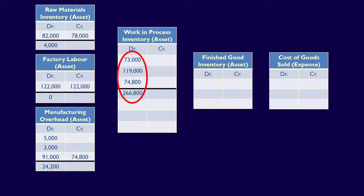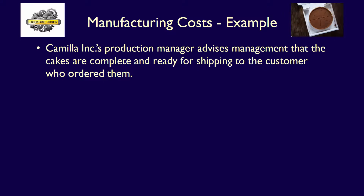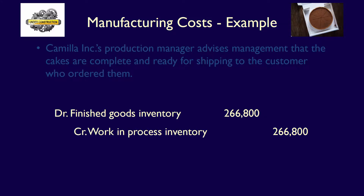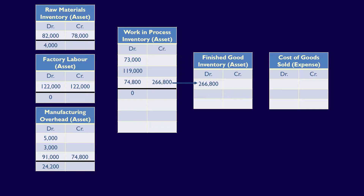All of the cakes are now complete. Management will sell the cakes to the customer who ordered them. Camilla Inc.'s production manager advises management that the cakes are complete and ready for shipping. Now that the cakes are complete, we can move them to finished goods inventory. The balance in work-in-process inventory is $266,800, and all of these cakes were processed for one customer. We therefore transfer the full amount by debiting finished goods inventory for $266,800 and crediting work-in-process inventory for the same amount.